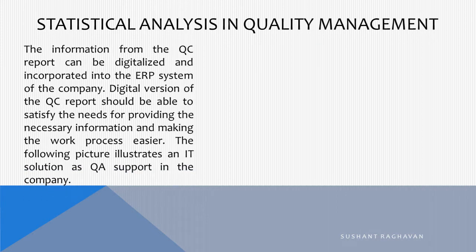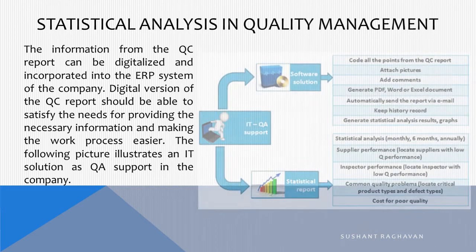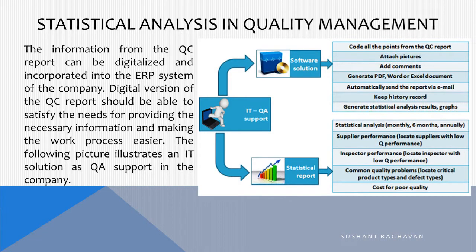The information from the QC report can be digitalized and incorporated into the ERP system of the company. The digital version of the QC report should be able to satisfy the needs for providing the necessary information and making the work process easier. The following picture illustrates an IT solution as QA support in the company: QA IT support, software solution, and statistical report.